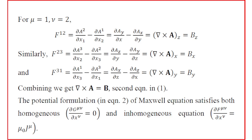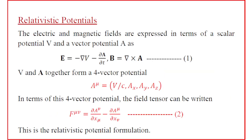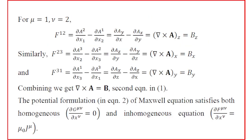So the potential formulation in equation 2 of Maxwell's equations is equivalent to equation 1. We can reproduce equation 1 from equation 2. This potential formulation satisfies both the homogeneous Maxwell's equation using the dual tensor and the inhomogeneous Maxwell's equation using the field tensor F^μν.